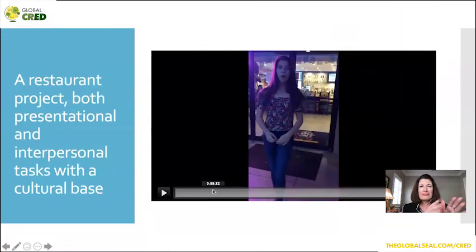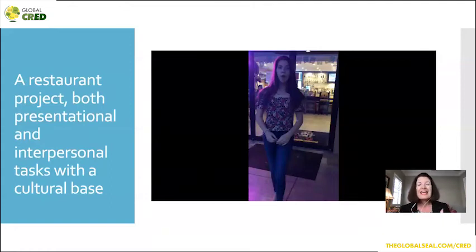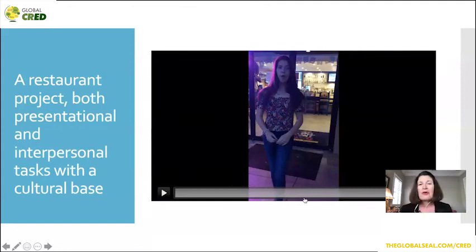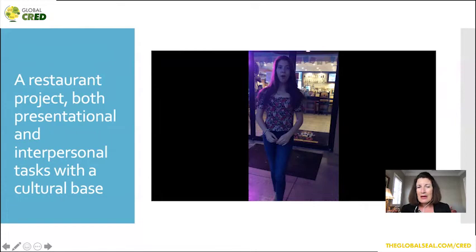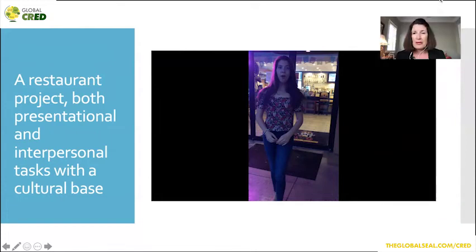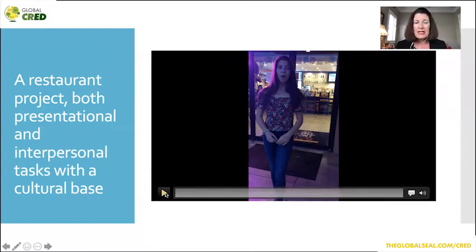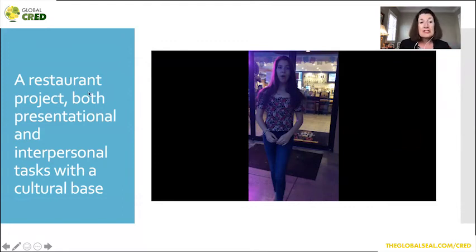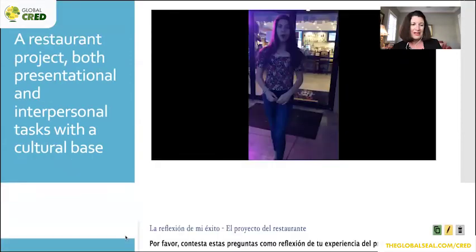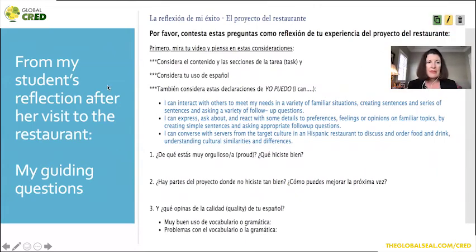I went from showing you things from thumbs up to thumbs down to other kinds of reflection where students have to reflect more deeply. Let's take a look at how I had this young lady reflect. This was the reflection tool I developed for the restaurant project, and she answered it on a blog I put up on the school LMS. It was La Reflexión de mi éxito — the reflection of my success — the restaurant project. It says: first, watch your video and think about these considerations. Consider the content and the sections of the task, consider your use of Spanish, and consider these I can-do statements: I can interact with others to meet my needs; I can express, ask about, and react with details to preferences, feelings, or opinions; I can converse with servers in the target culture in a Hispanic restaurant.